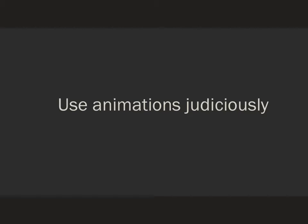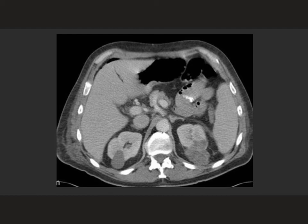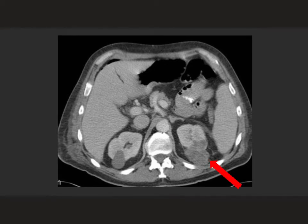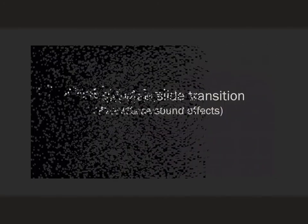Be very judicious in your use of animations. This particular slide had 86 different animations in it — I'll leave it to you to decide what that really does for interpretation and understanding of a physiological process. Simple annotations, such as showing an image without an arrow and then having an arrow appear, can be very effective. And I would recommend that you never, ever need to use a slide transition.